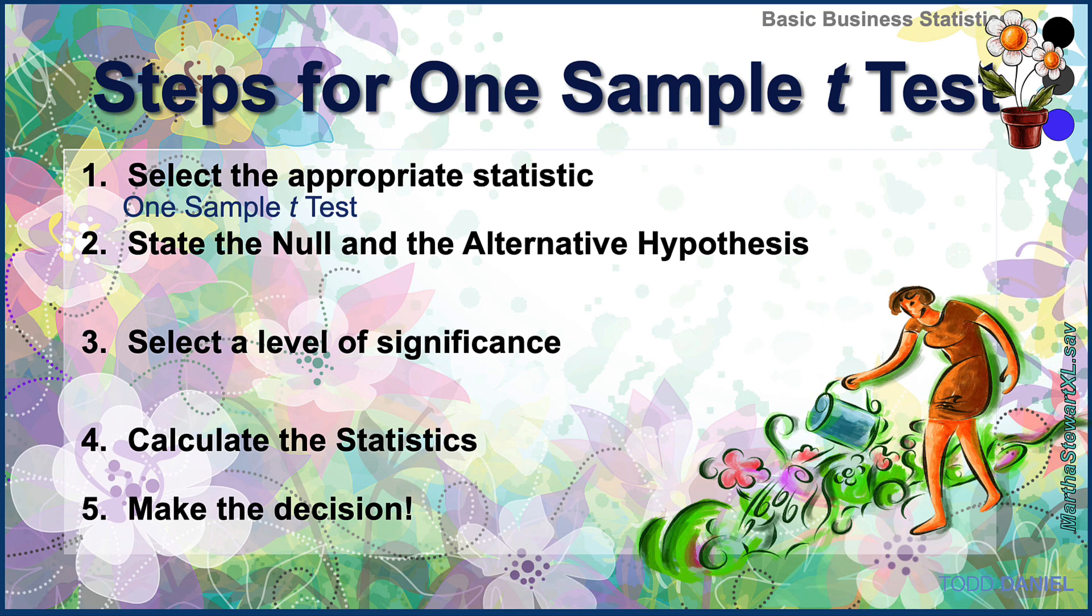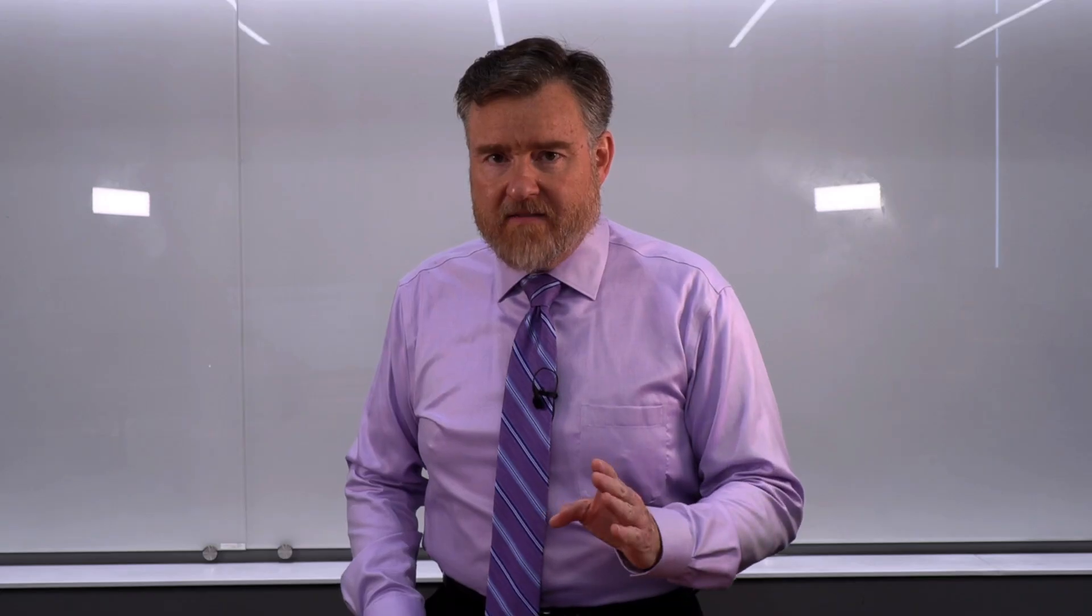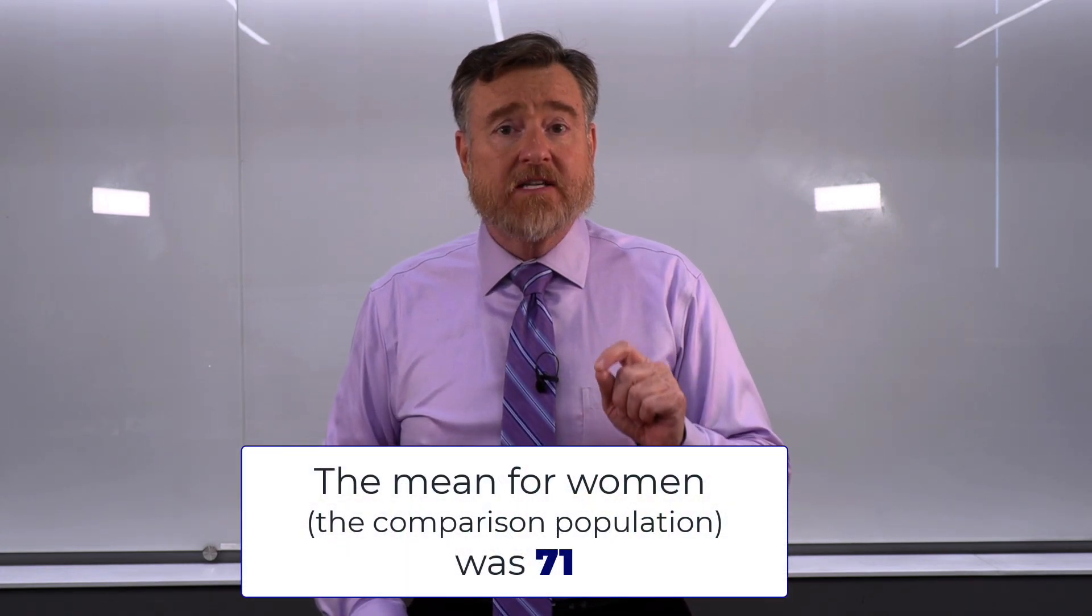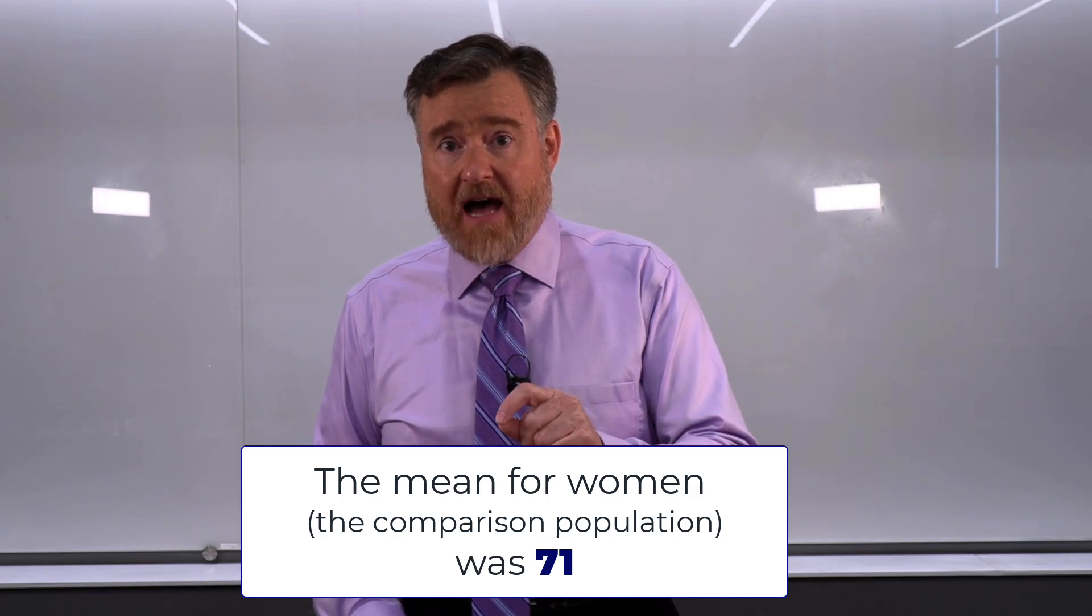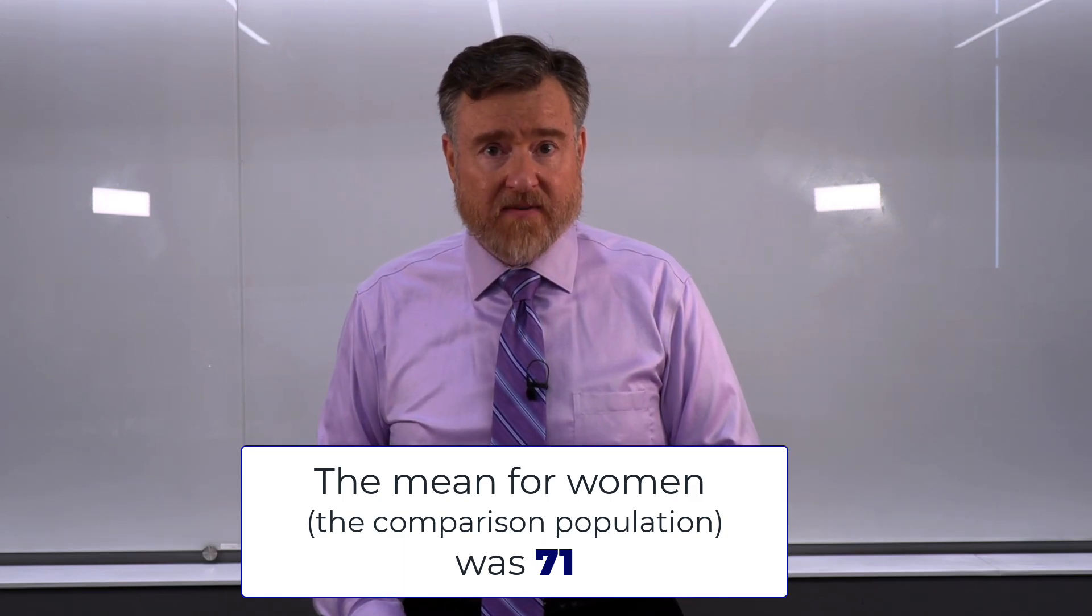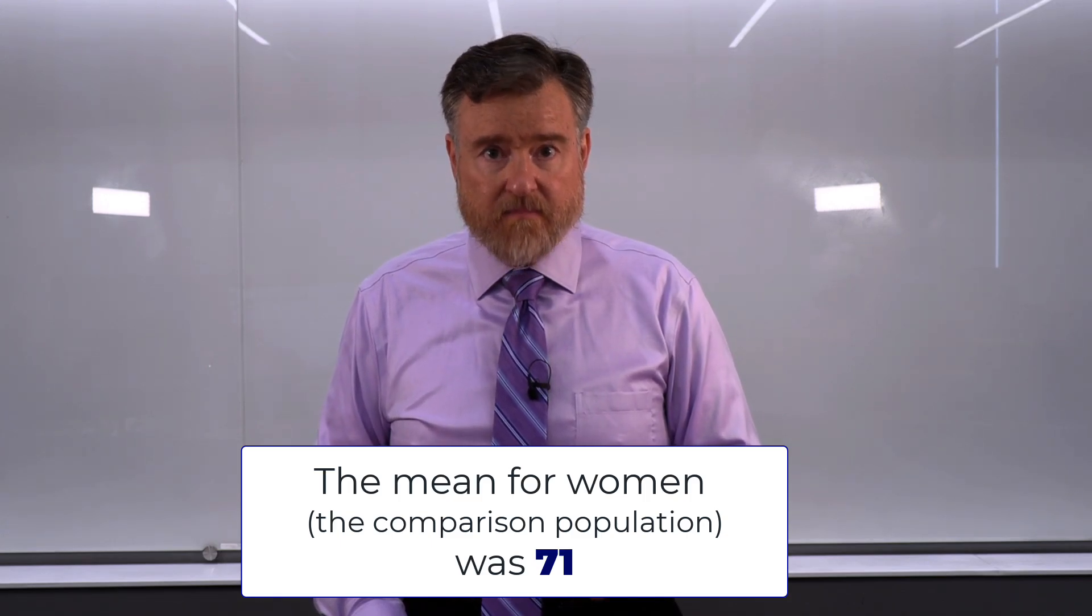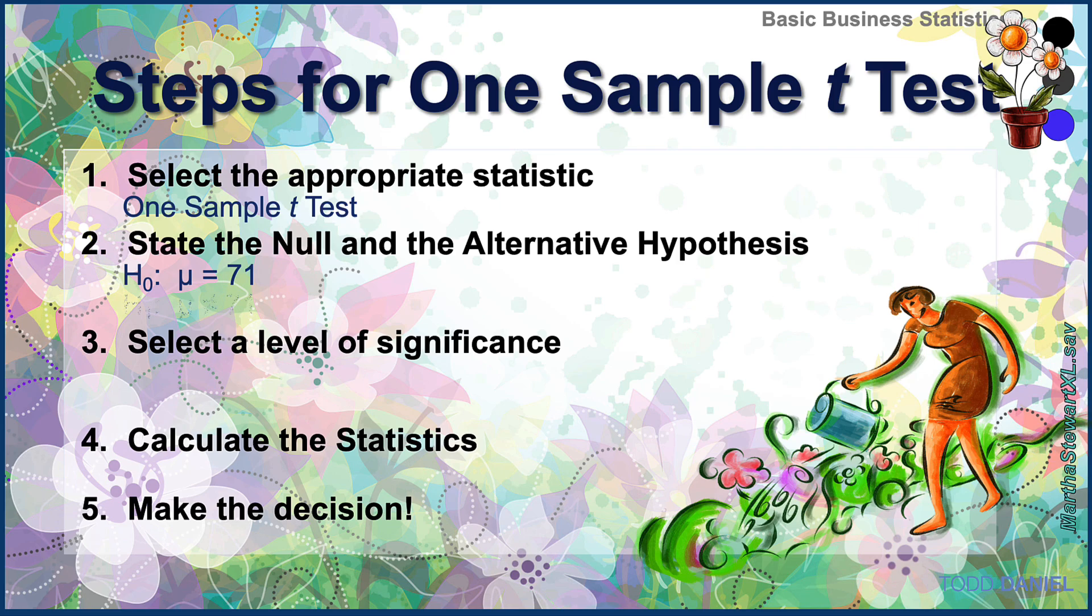Step number two is to select the null and alternative hypothesis. Our null hypothesis will be H₀: μ = 71. Where did that 71 come from? That is the mean of the population. I have simply plugged in that value for our null hypothesis. And you will see that same value again with our alternative hypothesis.